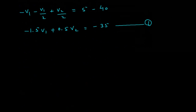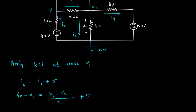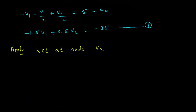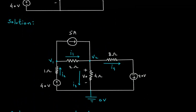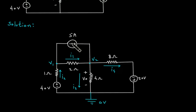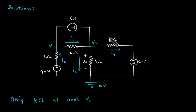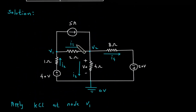Now we will apply KCL at node V2. At node V2, the incoming current is I1 and the leaving currents are I3 plus I4. The 5A source is also an entering current, so 5 plus I1 is the entering current, and I3 and I4 are the leaving currents.